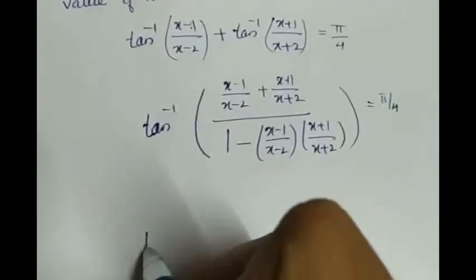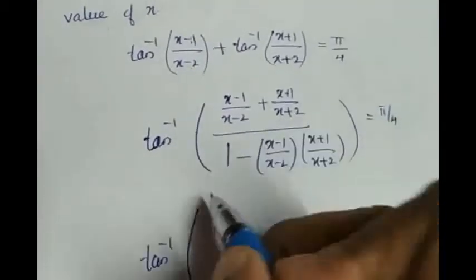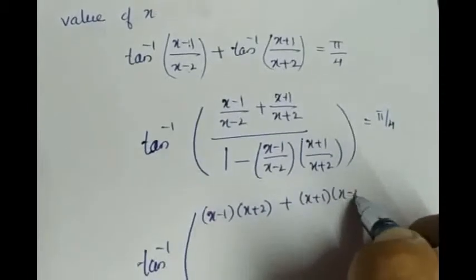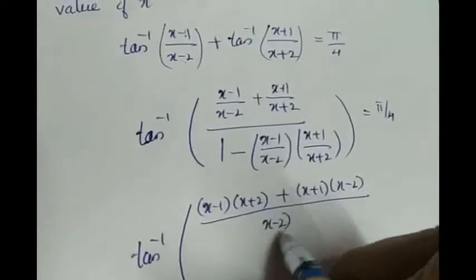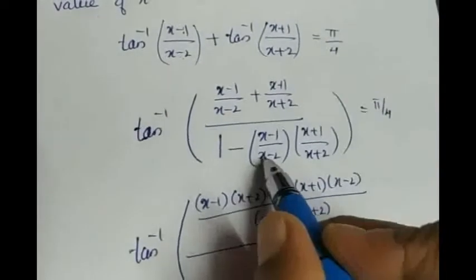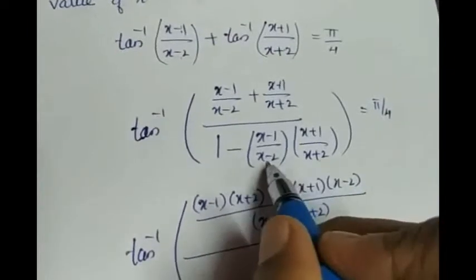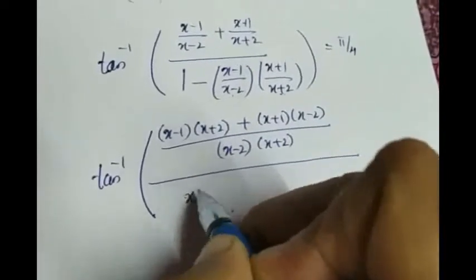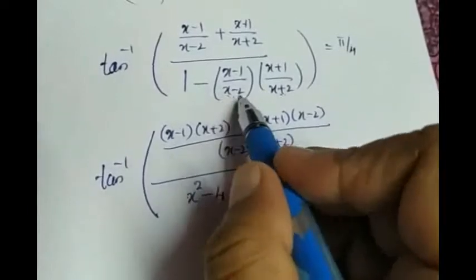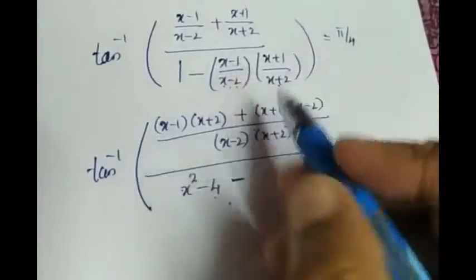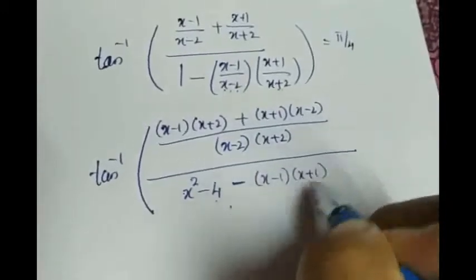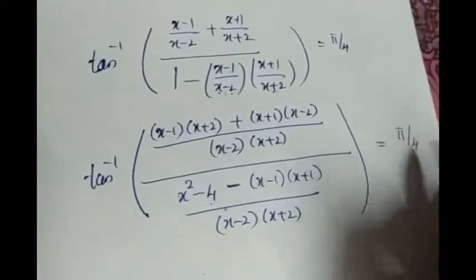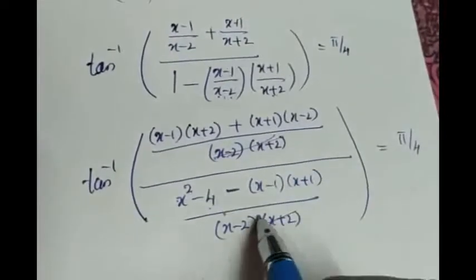Taking the LCM in the numerator, the first term is (x minus 1)(x plus 2) and the second term is (x plus 1)(x minus 2), all divided by (x minus 2)(x plus 2). In the denominator, (x minus 2)(x plus 2) is of the form (a minus b)(a plus b), which equals a squared minus b squared, giving x squared minus 4. The numerator of the denominator term is (x minus 1)(x plus 1), and the LCM denominators cancel.